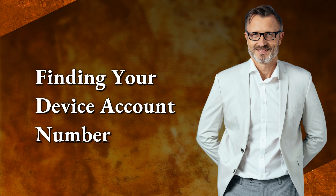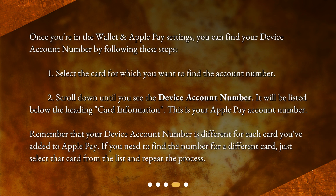Finding your device account number. Once you're in the Wallet and Apple Pay settings, you can find your device account number by following these steps: 1. Select the card for which you want to find the account number. 2. Scroll down until you see the device account number. It will be listed below the heading Card Information. This is your Apple Pay account number. Remember that your device account number is different for each card you've added to Apple Pay. If you need to find the number for a different card, just select that card from the list and repeat the process.